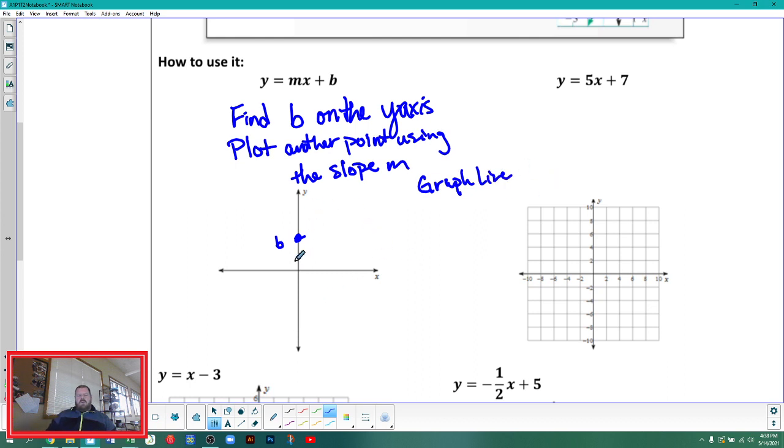This turns into our talk from two days ago when we talked about graphing with a point and a slope, but our point's always going to be on the y-axis this time. So I'll plot my point b, I'll step out my slope, if I want to do it multiple times I can, hopefully they're on the same line, and then graph my line. Let's look at that in action.